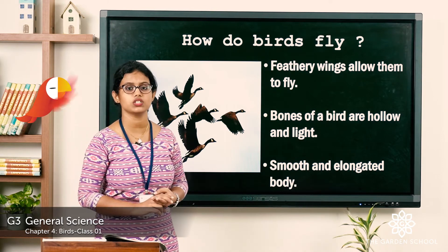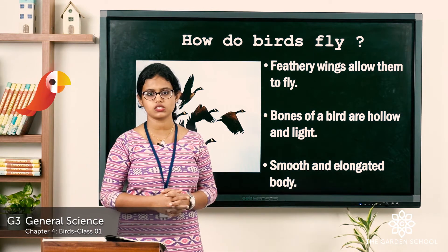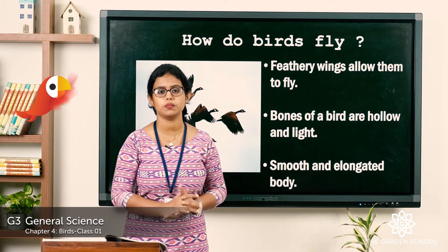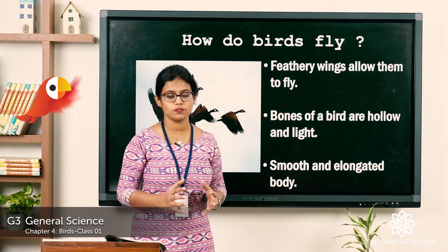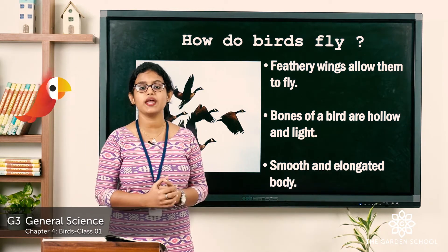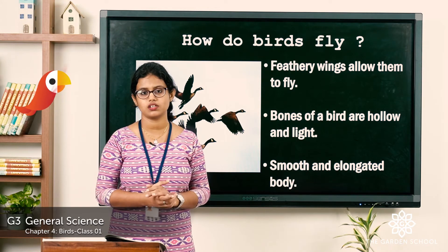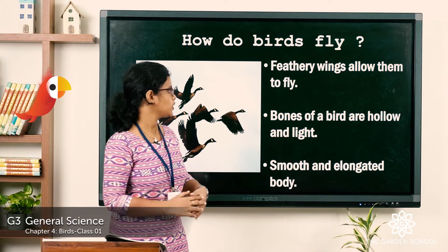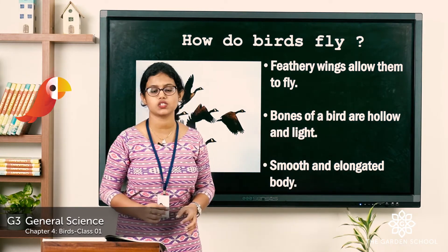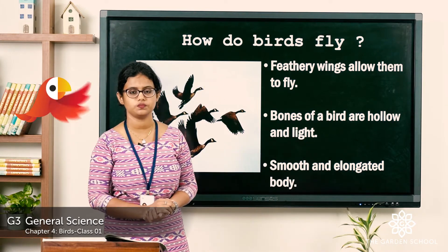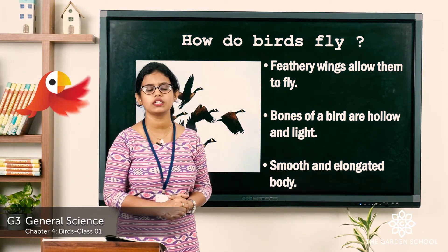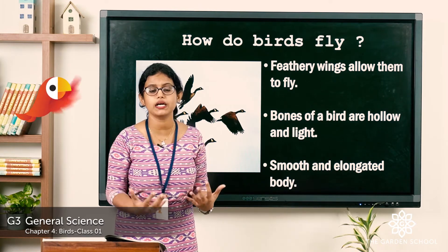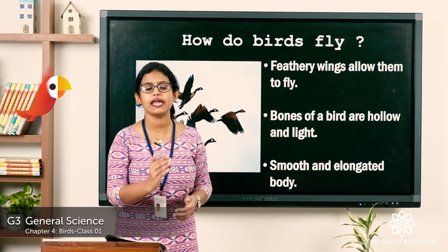The next special feature is their bones. The bones of a bird are different from those of a human being — in their bones there are air pockets, and this makes their body lighter. When their body becomes lighter, they can easily float in the air. Bones of a bird are hollow and light. Hollow means empty. These air pockets in their bones make their body lighter so they can easily float in the sky.